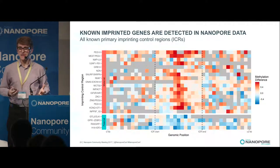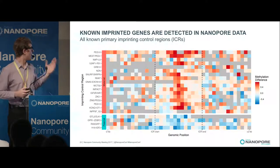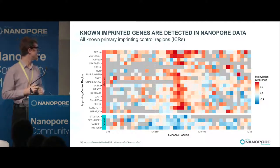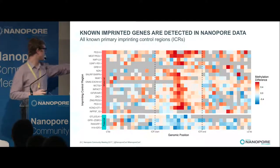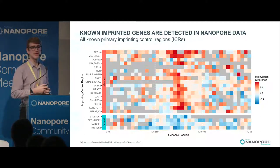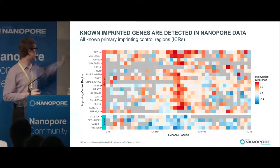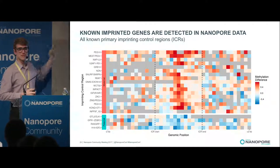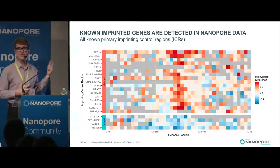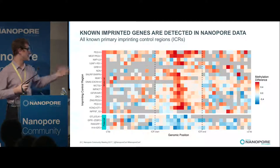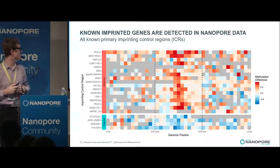In case you thought I was cherry-picking — which I was — these are all the primary imprinting control regions. A couple have too little coverage to make any reasonable statement about, but most show a strong pattern: maternal imprinting control regions show a strong difference towards the maternal allele, and paternal ones show the same thing in the opposite direction.